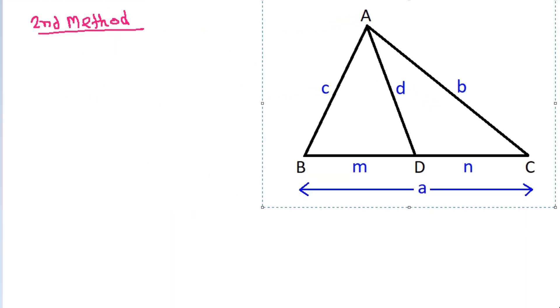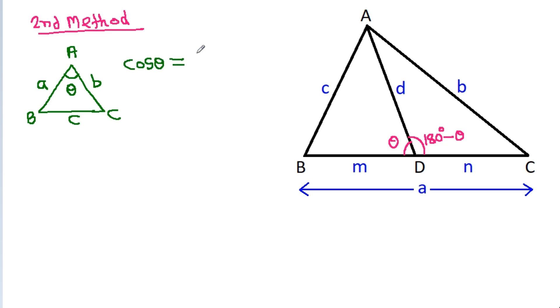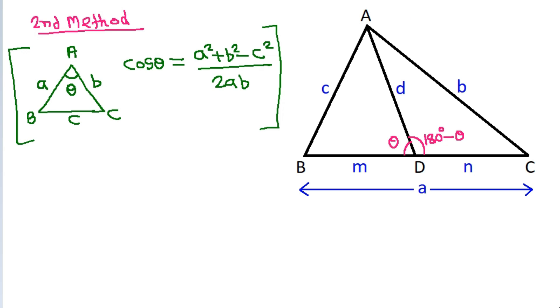Second method: suppose angle BDA is theta, then angle CDA will be 180° − theta. In any triangle with sides a, b, c and angle theta opposite to side c, the cosine rule gives cos theta = (a² + b² − c²) / 2ab.